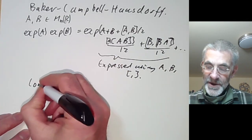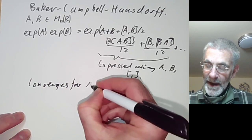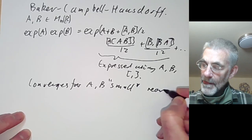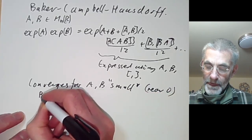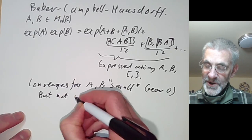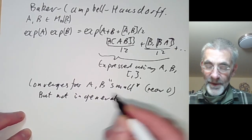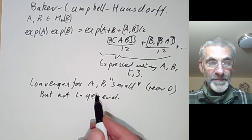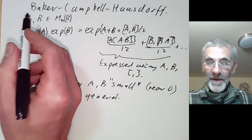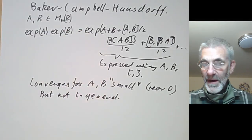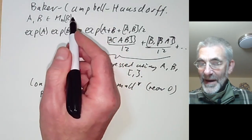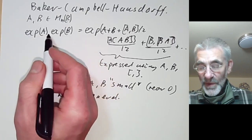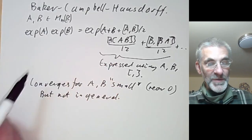It converges for A and B small — in other words, in some neighbourhood of zero — but it does not converge in general. We saw a consequence of this non-convergence in the previous lecture: the exponential map wasn't in general onto. If the Baker-Campbell-Hausdorff formula always converged, we would be able to prove the exponential map is onto, but it just isn't.